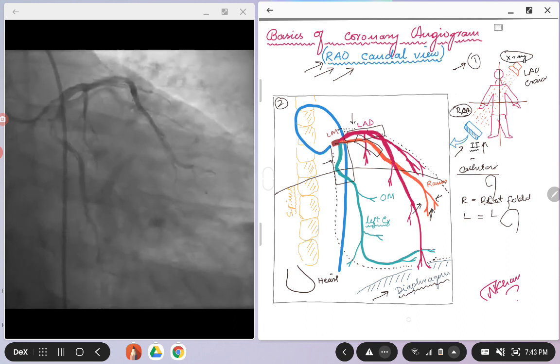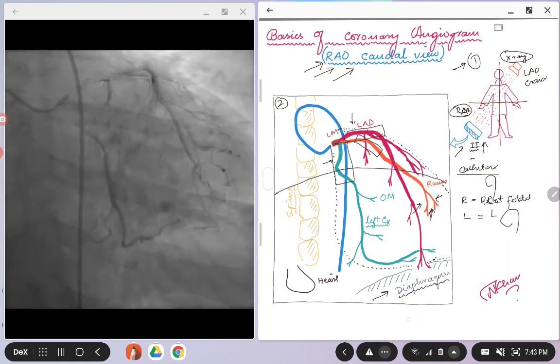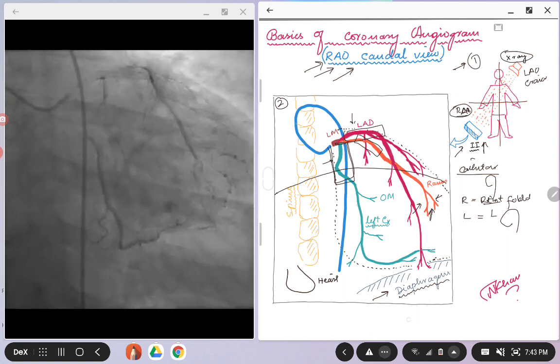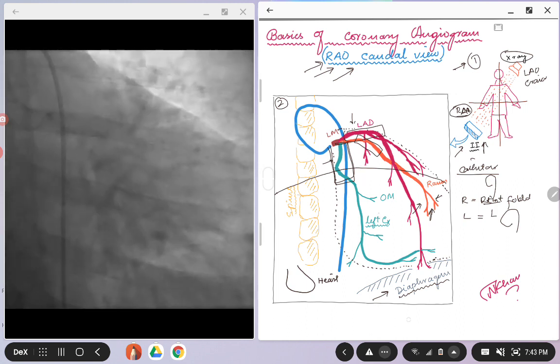Then moving on to the RAO caudal view, you can see probably the proximal segment of the vessels, especially the left circumflex, LAD, and ramus intermedius in this case.